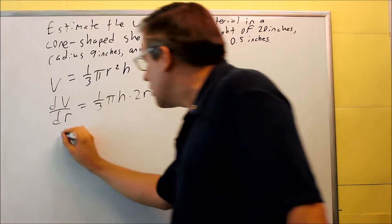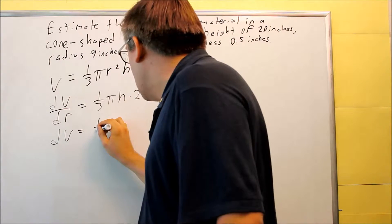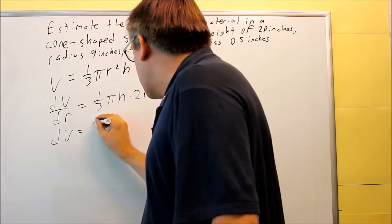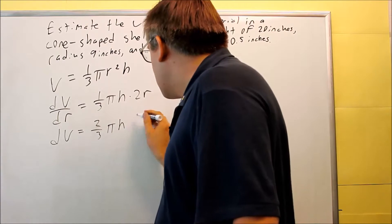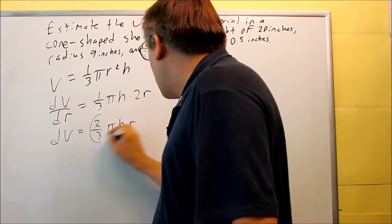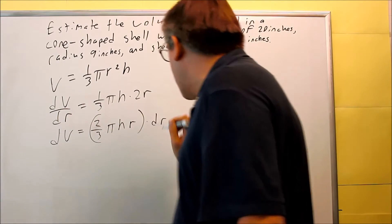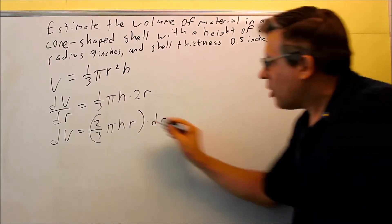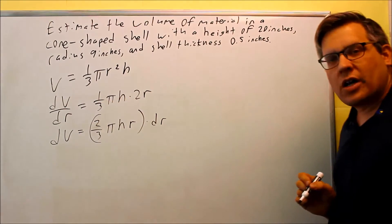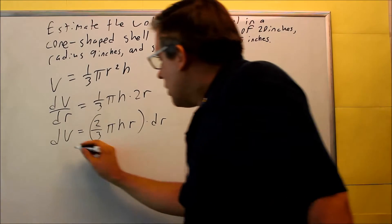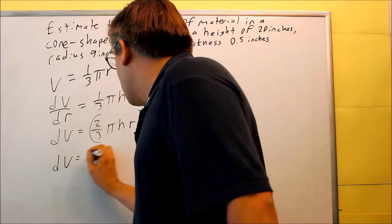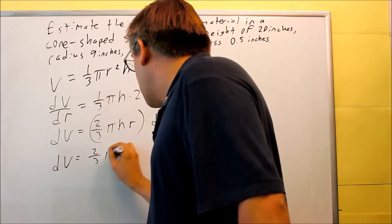So now I have this. Now I'm going to solve for dV. So dV is equal to, when I put this together, 2/3 π h r. And all this is going to be multiplied by dr. So I'm going to multiply on both sides to get the dV by itself. Okay, so this right here, dV is going to be equal to 2/3 π.